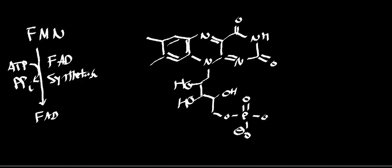If I drew FAD, you would find there would be an extra AMP group — an extra phosphate with an adenosine. Notice that FMN doesn't have that. This is the oxidized form of FMN.